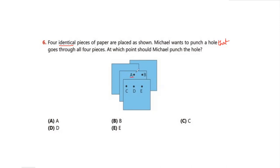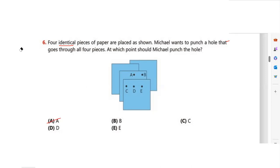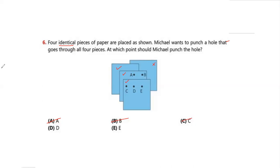If you punch through A, it goes through three pieces but not the fourth, so A is not the answer. If you punch through B, two pieces are left out, so B is not the answer. If you punch through C, one piece is left out. If you punch through D, all four pieces are covered — they are all in a row. So the answer is option D.